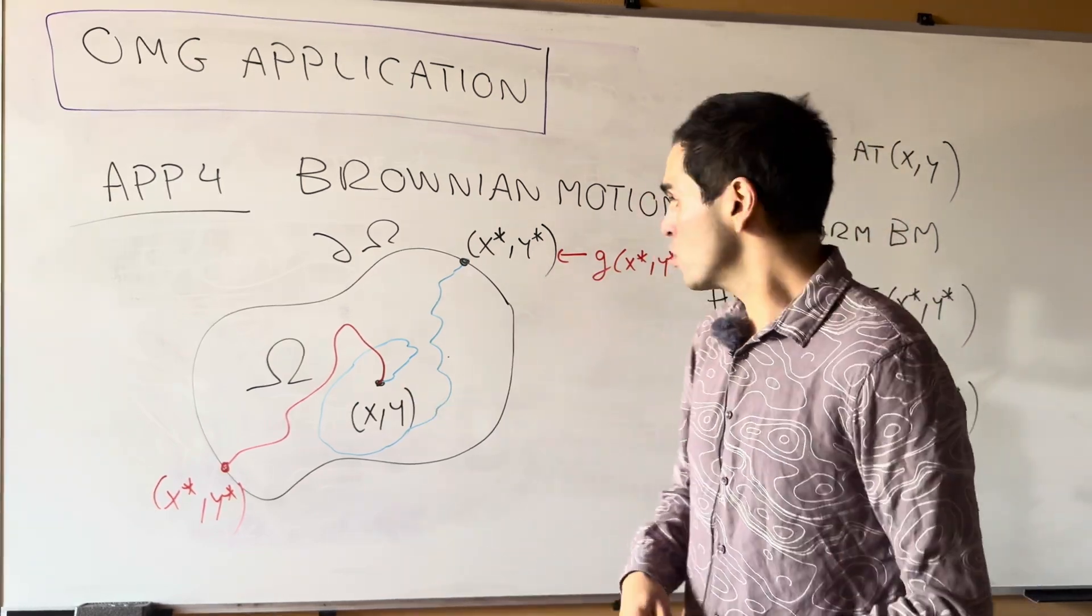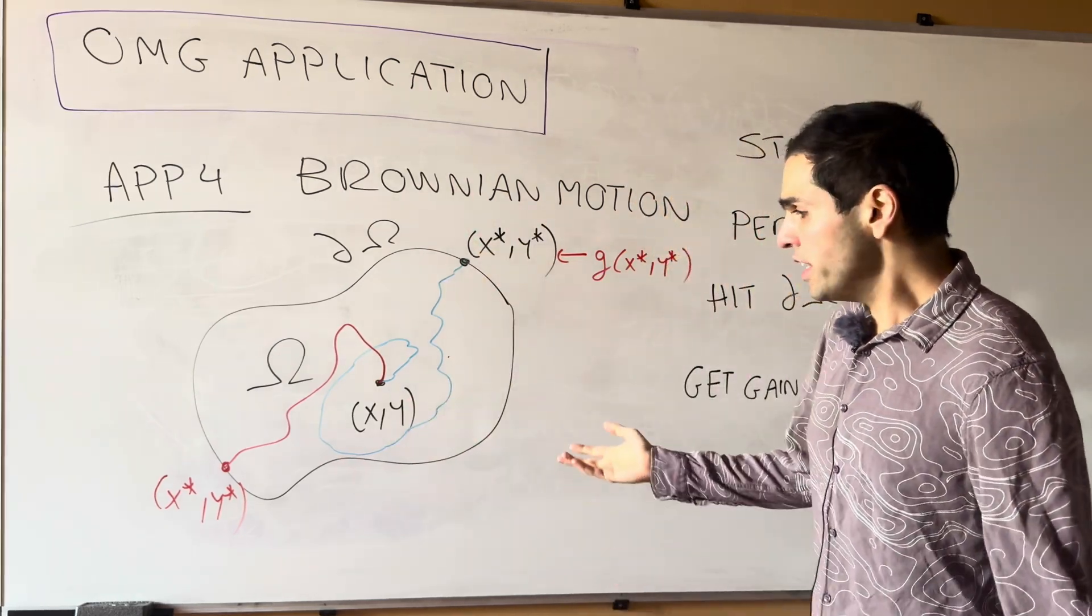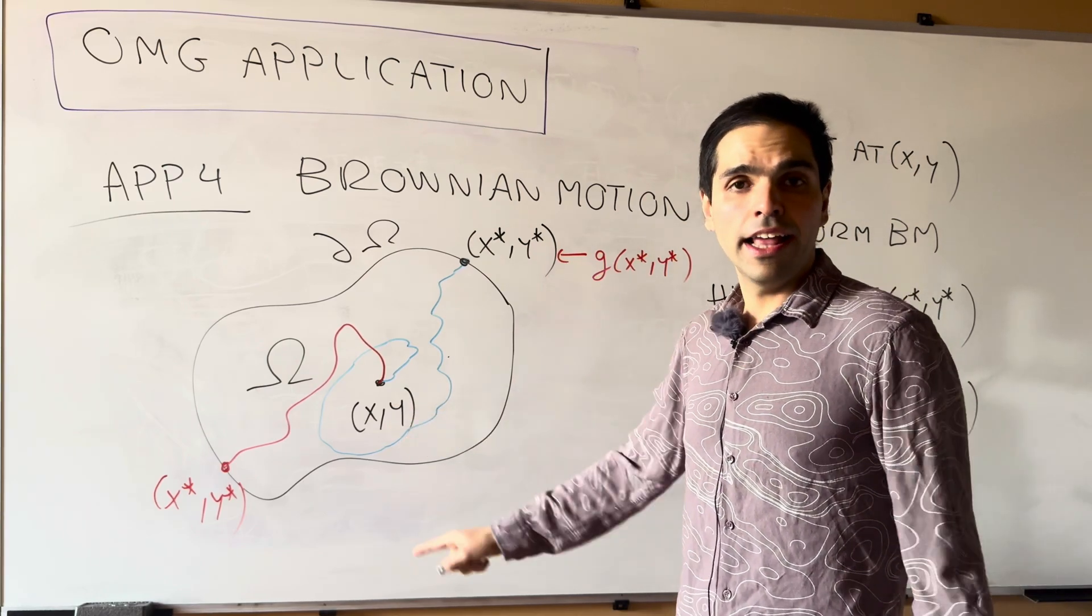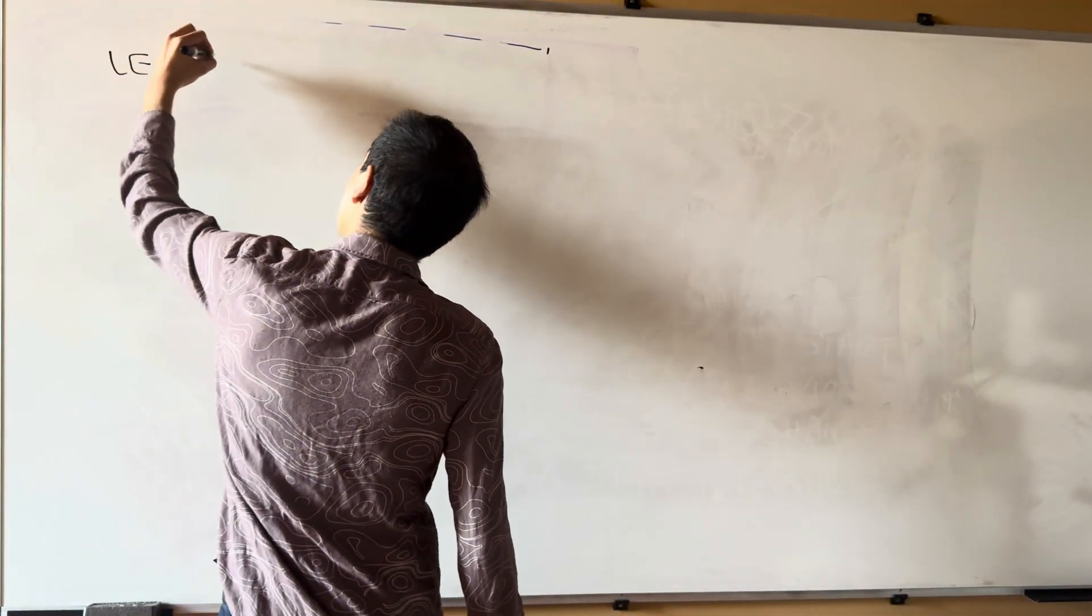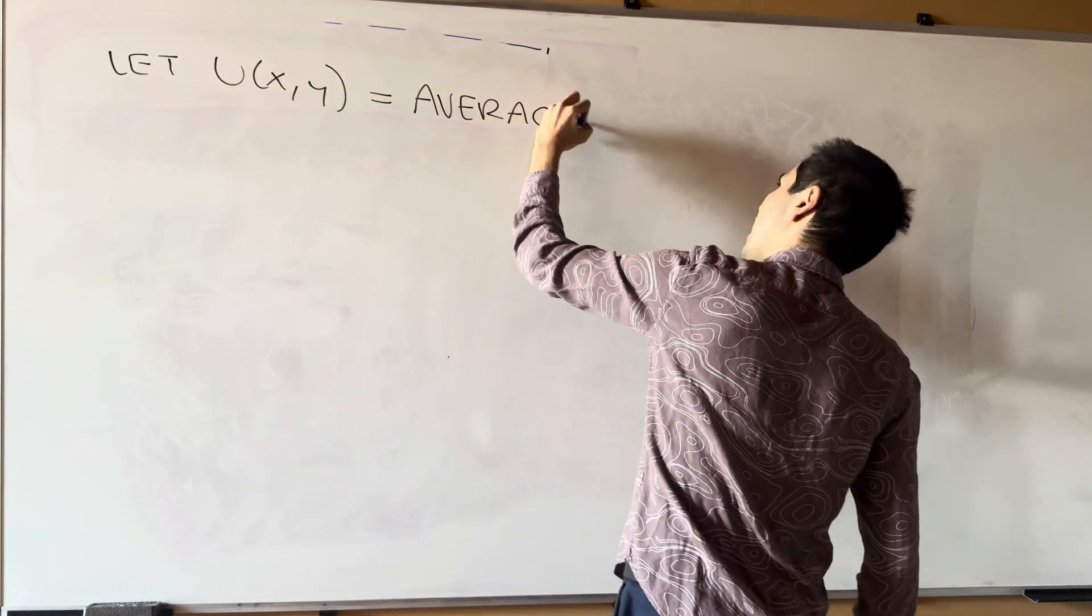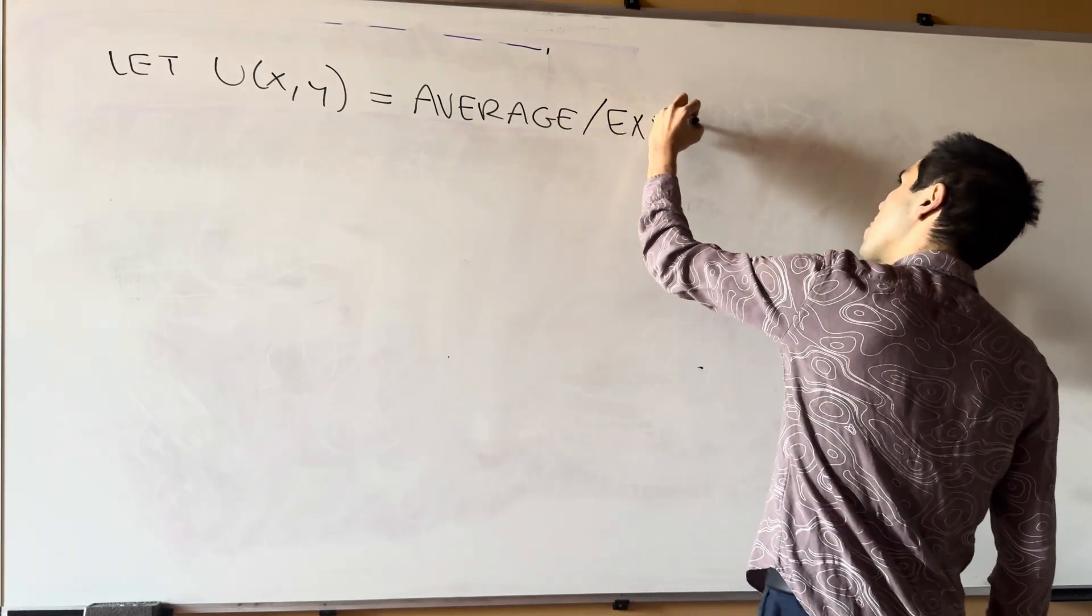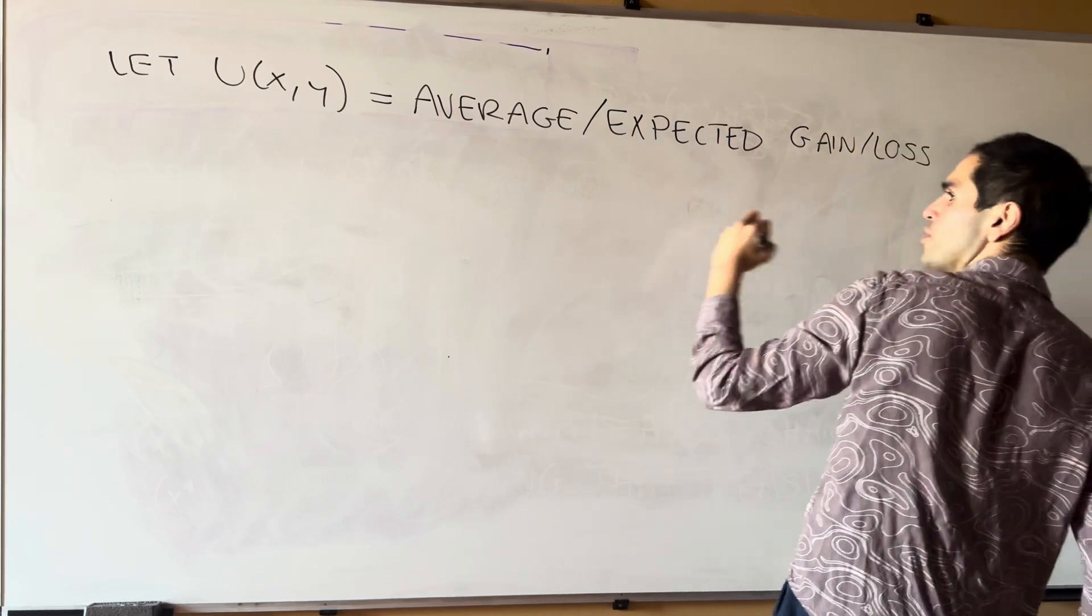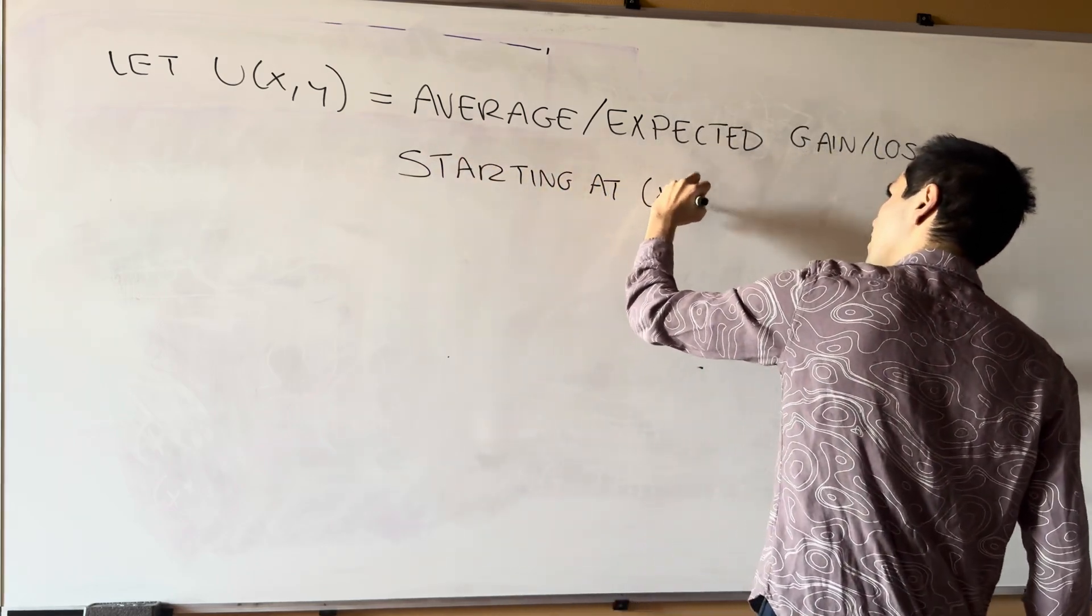Think in terms of insurance, in other words, the average price you have to pay to the insurance. And in particular, we can consider what's called the average value starting at x comma y, and that's what we call u. So once again, let u of x, y be the average, or technically, if you know probability, expected value, gain or loss starting at x comma y.